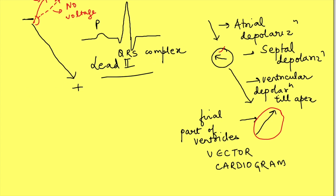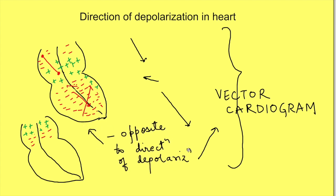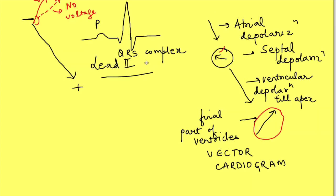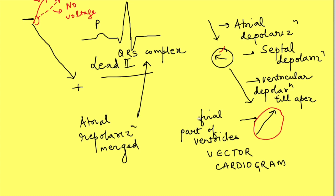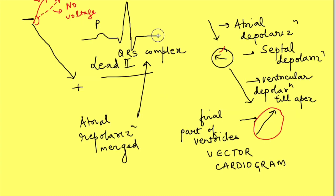Now, how about repolarization? During atrial repolarization, the part of the atria that depolarized first repolarizes first, so the direction of change in potential becomes opposite. However, atrial repolarization is not recorded separately — it is merged with the QRS complex because they occur at the same time. In the ventricles, the part that depolarizes first repolarizes last. This is important because it determines the direction in which the voltage is recorded. The direction of the repolarization vector remains the same as that of ventricular depolarization, which is the same as the direction of Lead II, so ventricular repolarization is recorded as a positive wave in Lead II.